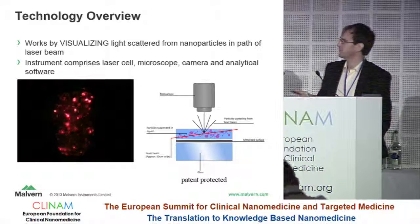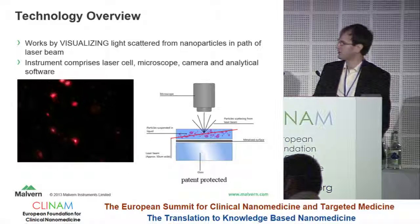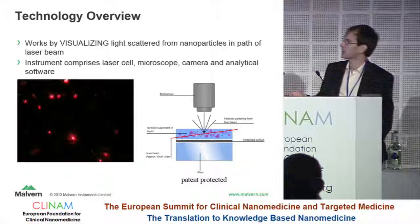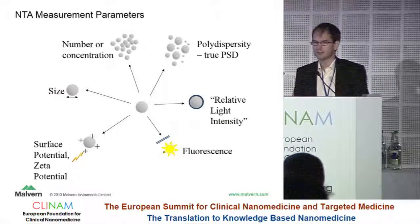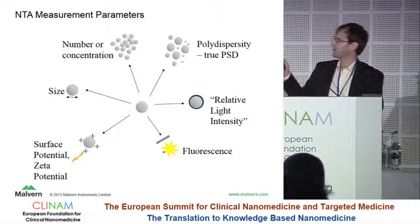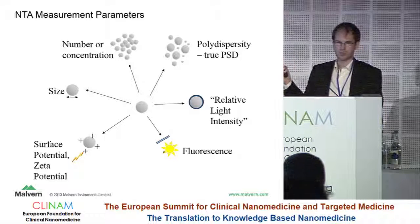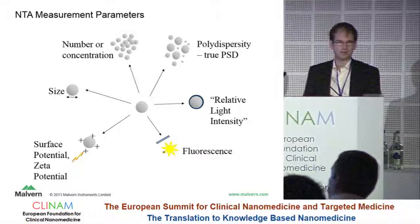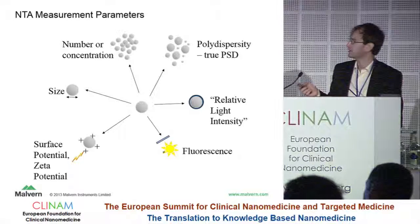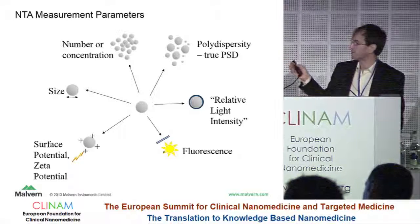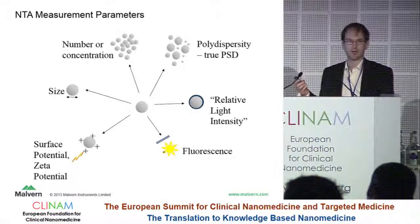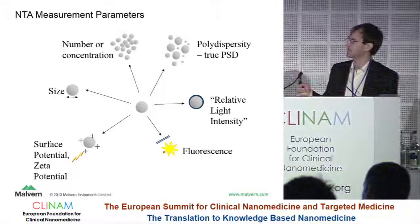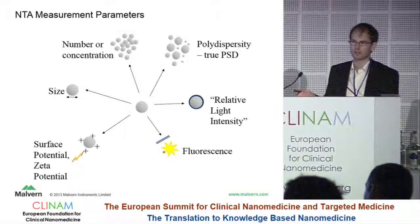We have a slightly different optical setup to the particle metrics approach. This is patent-protected illumination. It gives us a very narrow beam, but a similar sort of image. The parameters that we can measure are the size and the true particle size distribution. Reproducibility and repeatability are something I want to stress here — that's very important. Clemens talked about light intensity, the amount of light that a particle scatters, giving some indication of particle material. So gold scatters more than a polystyrene particle, and you can analyze your video to look at that. I have a couple of nice fluorescence examples that I'll get onto at the end.